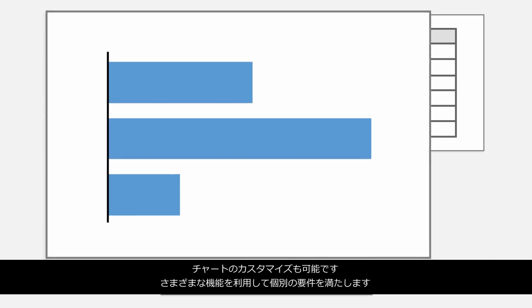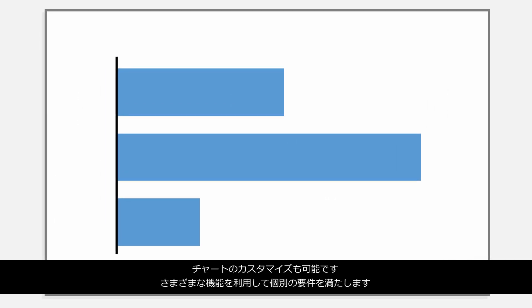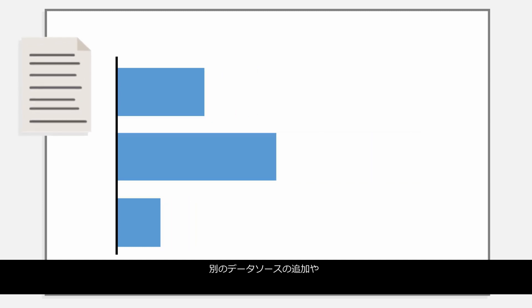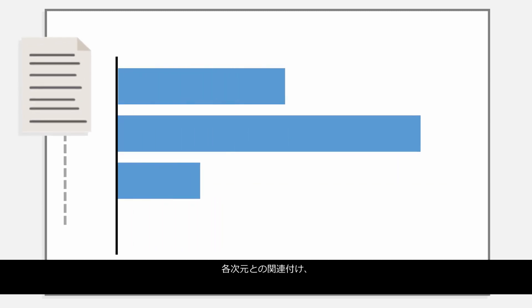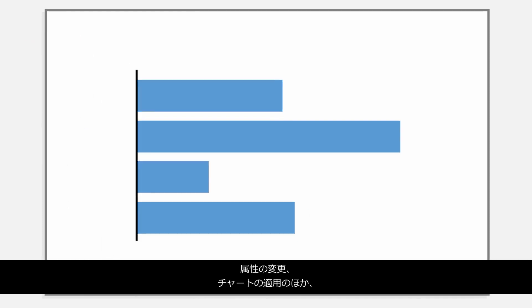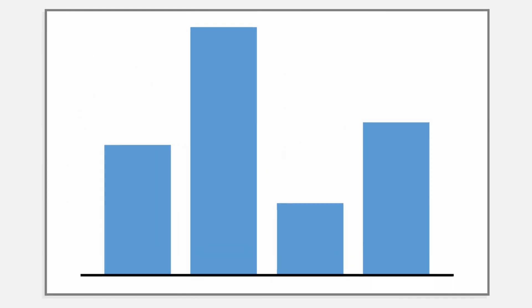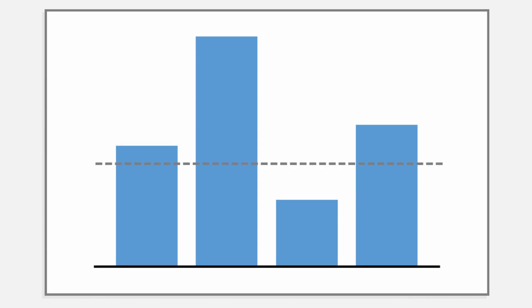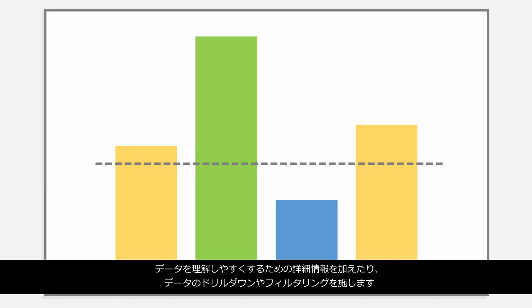You can customize charts to meet your specific requirements using a wide range of features, including adding other data sources and linking dimensions, changing the type or orientation of the chart, adding details to help make sense of the data such as reference lines and performance thresholds, and drilling down into or filtering data.